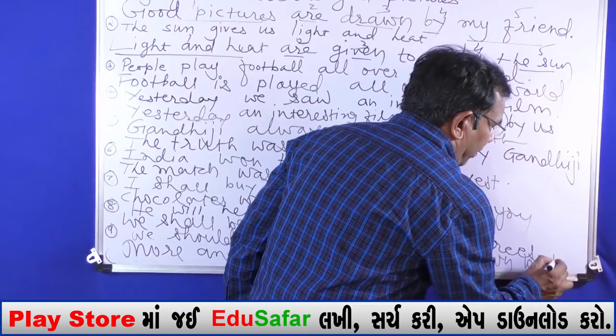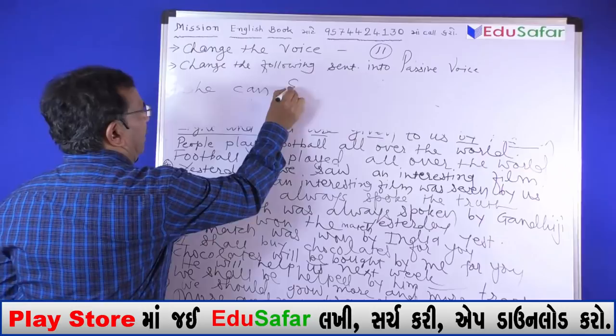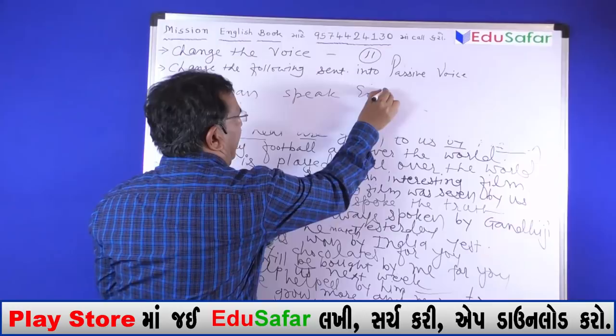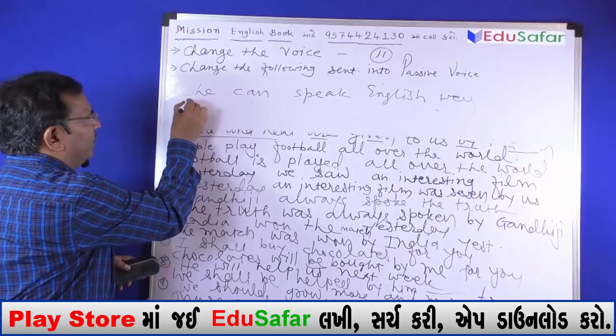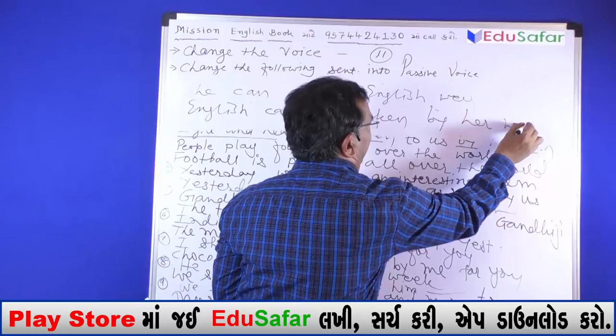She can drive a car well. She can speak English well. English can be spoken by her well. Five words are formed.